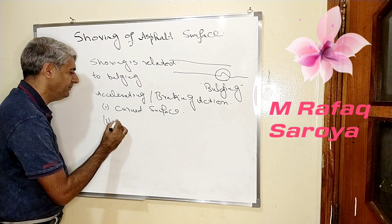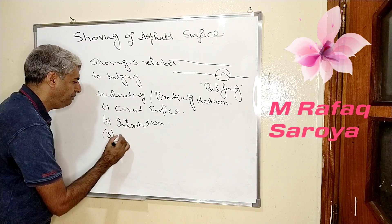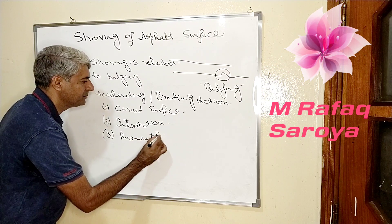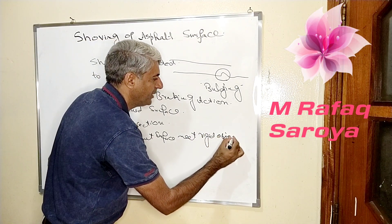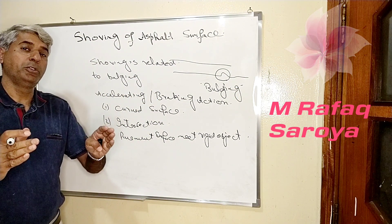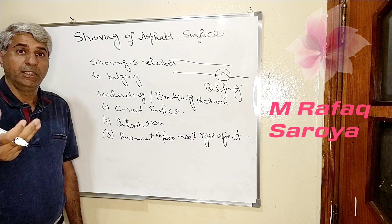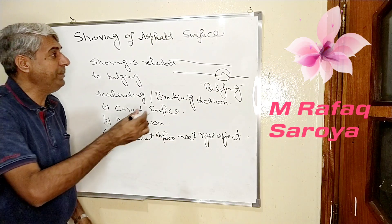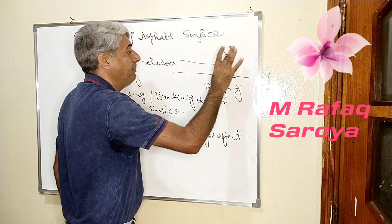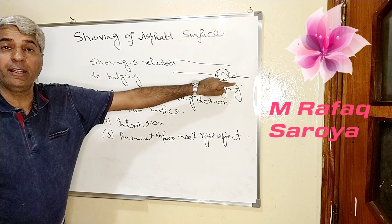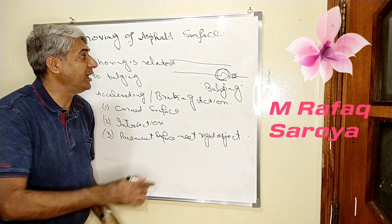Second, it can occur at intersections. Third, when your pavement surface meets a rigid object — for example, on the road you have a curb stone. When you accelerate your vehicle and some type of effect is observed on the surface, this may be because the surface tries to move but there is a hard object blocking it. So it cannot propagate further and will show this type of bulging near the rigid object, because the curb stone is acting as a rigid object.